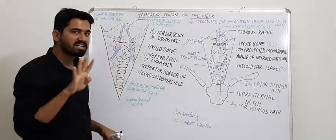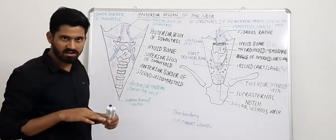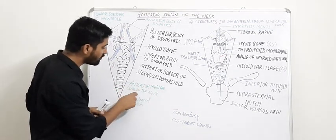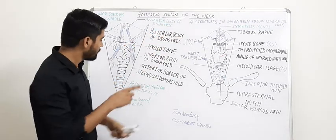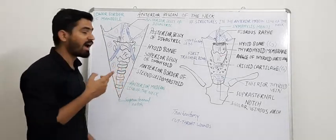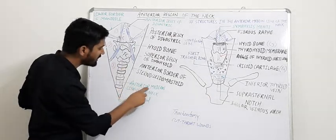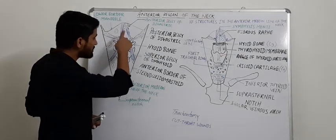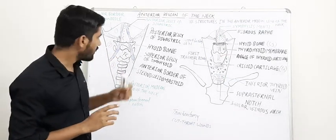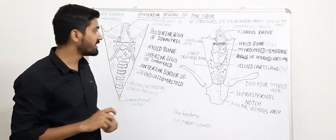Before going into detail of the triangles of the neck, it is of great clinical importance to know the structures in the anterior medial line of the neck. The anterior region of the neck is divided by the anterior medial line into the anterior triangle on either side. These structures are very essential during tracheostomy and in clinical examination.